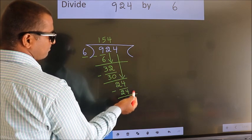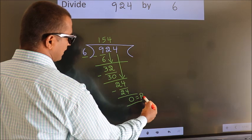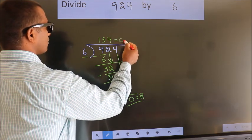No more numbers to bring it down. So we stop here. This is our remainder. This is our quotient.